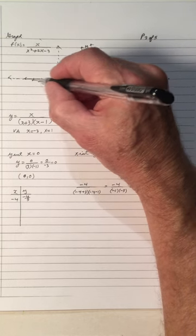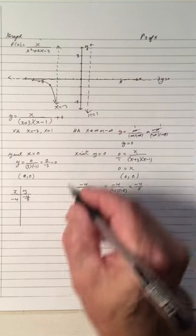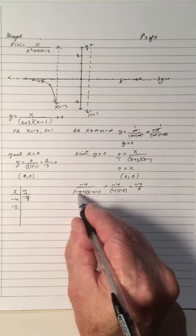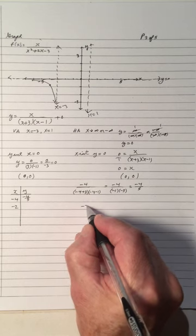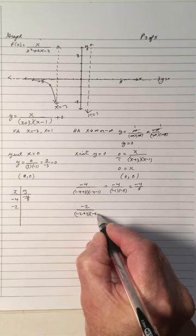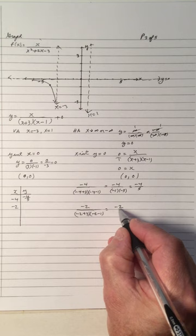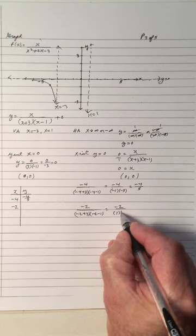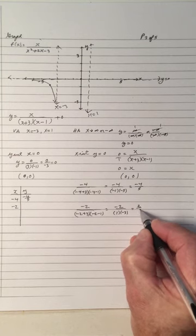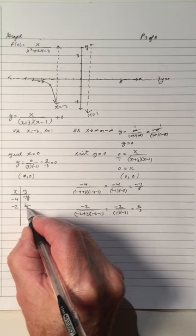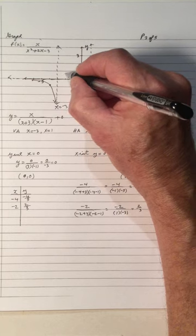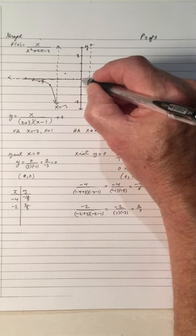Let's check x equals negative 2. We get negative 2 over (negative 2 plus 3)(negative 2 minus 1), which is negative 2 over (1)(negative 3), giving 2/3. So negative 2 gives y equals 2/3. Negative 2 is right here, and 2/3 is about here. Since the graph is at 2/3 and rising, it's not coming down — it has to be going up toward the vertical asymptote.